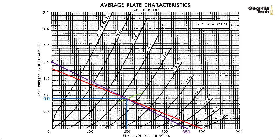Now we can draw a line between those two points. You didn't actually have to compute both of them if you're printing out the graphs and using a straight edge — you could just plot one point and draw a line through the DC operating point. However, I like to compute both points, draw a line between them, and verify that the line intersects the DC operating point as a sanity check.